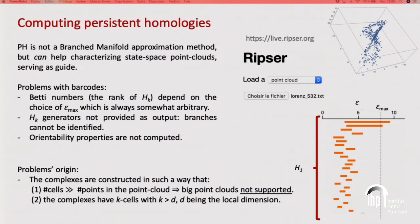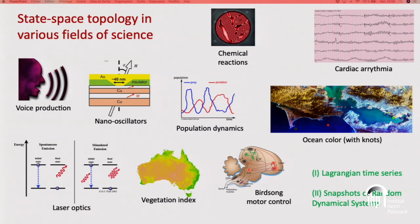Orientability properties are not computed in persistent homology. The origin of the problem is that these complexes are constructed with a number of cells that largely exceeds the number of points in the point cloud, so big point clouds are generally not supported — you have to reduce your point cloud or do supplementary treatments. Also, the complexes are constructed with K-cells having larger dimension than the local dimension of your manifold, which causes problems. Even if not fully adapted, this is a tool that exists and has been developed with many applications in various fields of science.